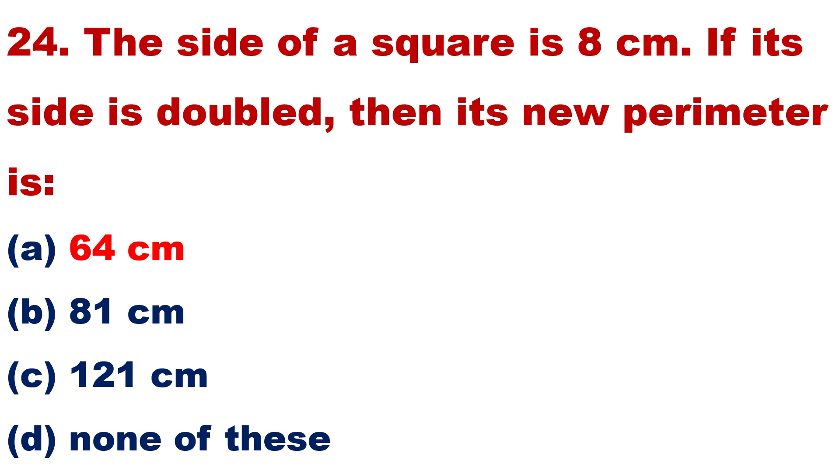The side of a square is 8 cm. If its side is doubled, then its new perimeter is. Select your answer after solution.